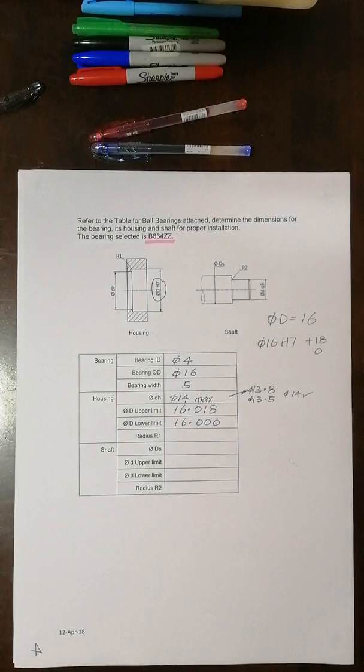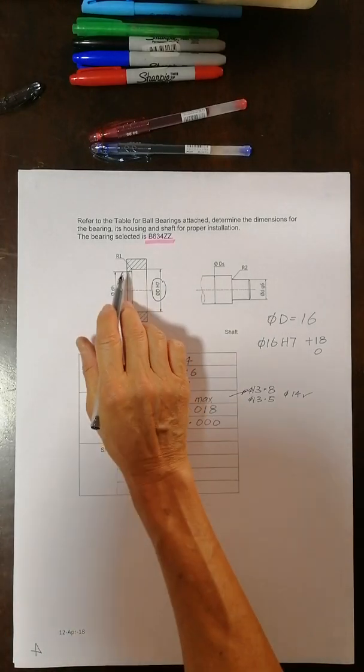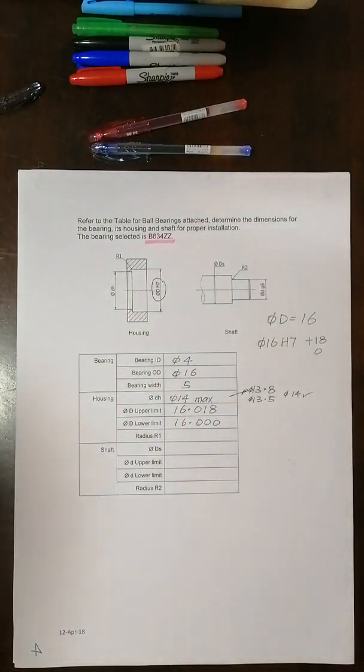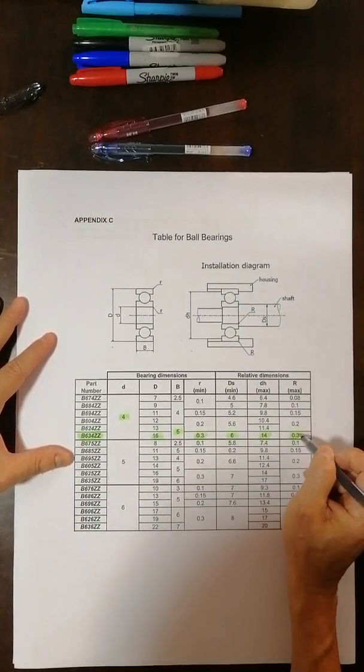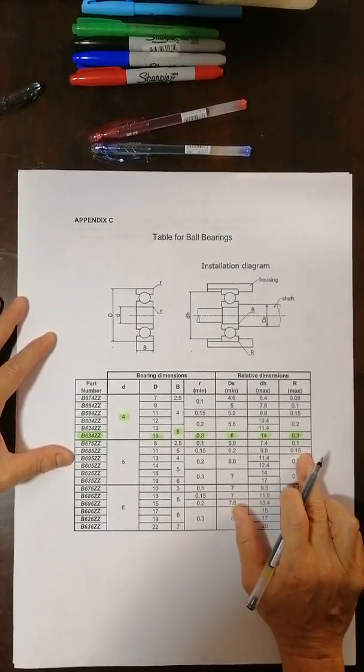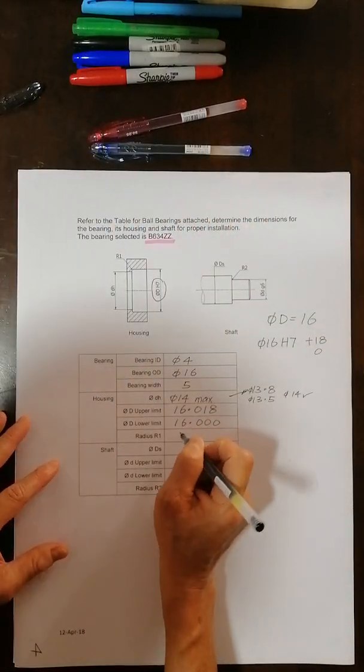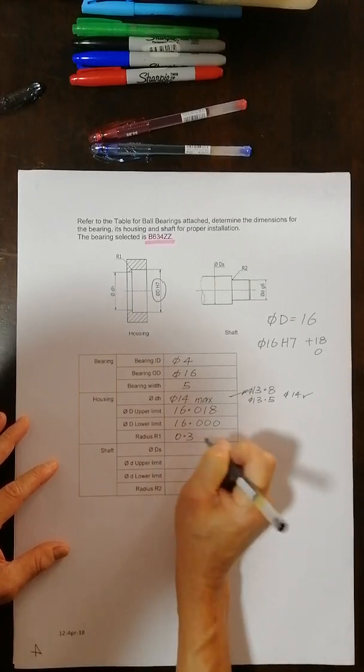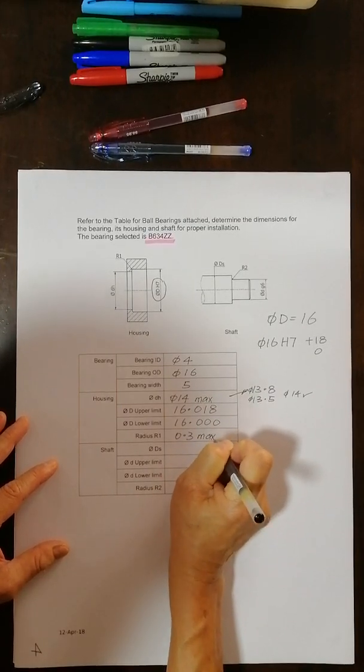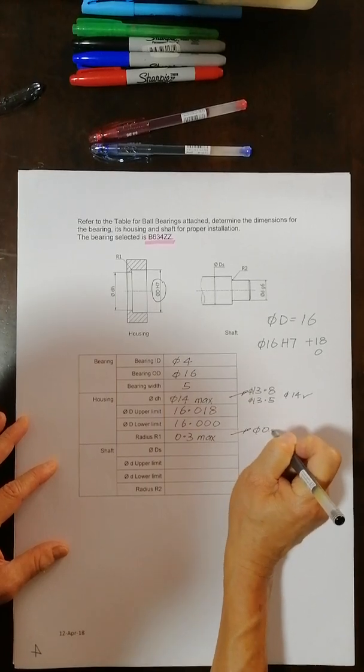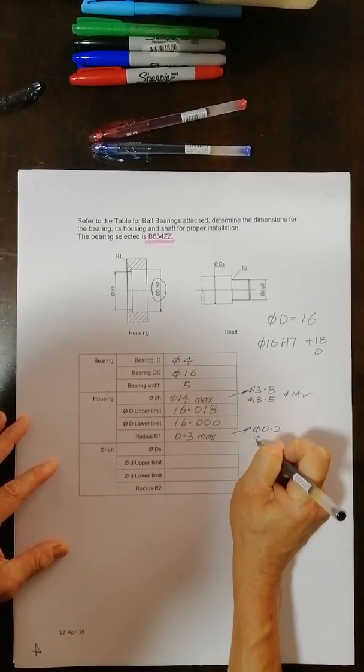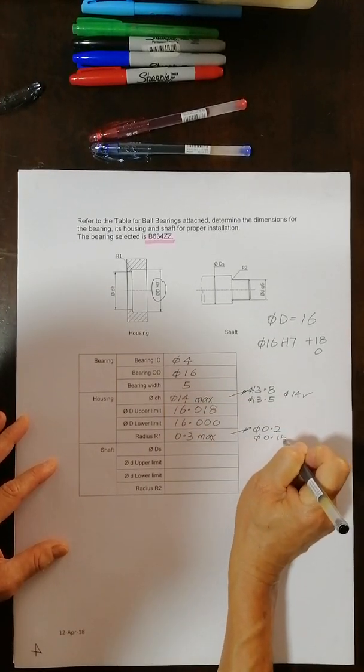And what's the radius R1? So radius R1 is over here. Look back at the housing. R1. You see 0.3 maximum. That means you should not exceed 0.3. So I can put radius here 0.3 maximum, which means I can have a value like 0.2 or 0.15. That's okay.